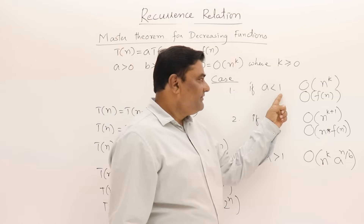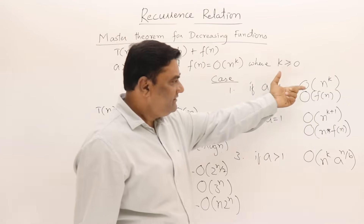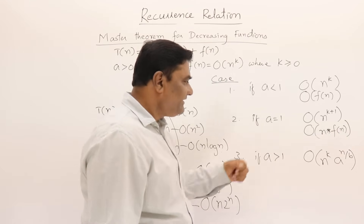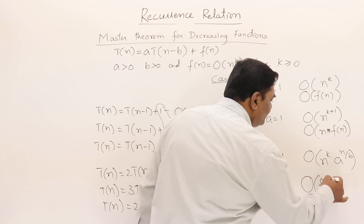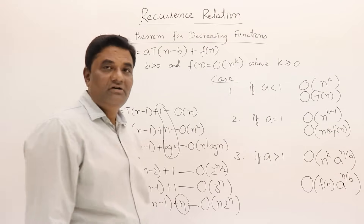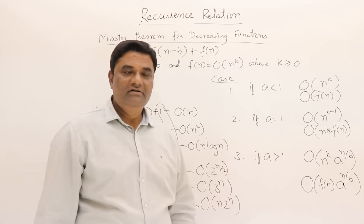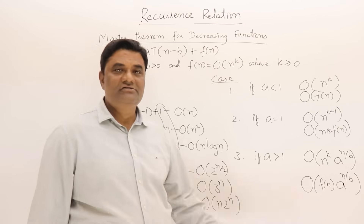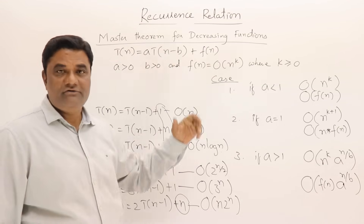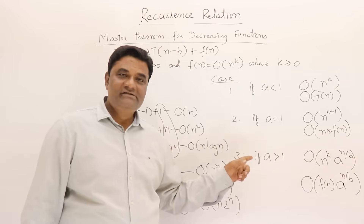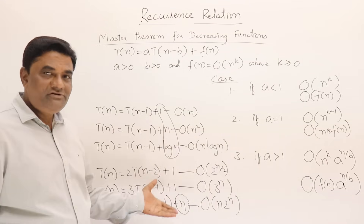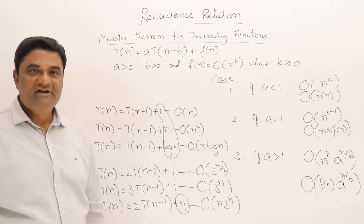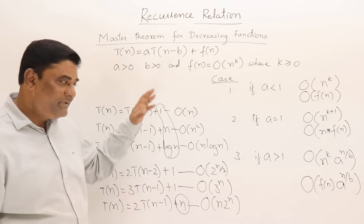To summarize: if a < 1, the answer is O(f(n)) = O(n^k); if a = 1, the answer is O(n^(k+1)) = O(n · f(n)); if a > 1, the answer is O(f(n) · a^(n/b)). By following this Master's Theorem you can solve any decreasing recurrence relation of this form. There is no strict logic behind it — you have to observe and practice. Spend time on it, solve examples yourself, and write it at least once to remember it.